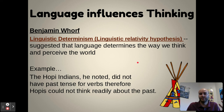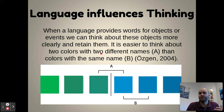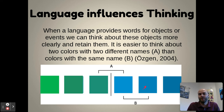When language provides words for objects or events, we can think about those objects more clearly and retain them. For example, it's easier to think about two colors if they have two different names. If I say 'think about green' or 'think about blue,' you can pull those up quickly. But if I describe a darker blue and a lighter blue without giving them specific names, you'll have trouble thinking about them precisely — knowing the specific names allows you to think about them more clearly.